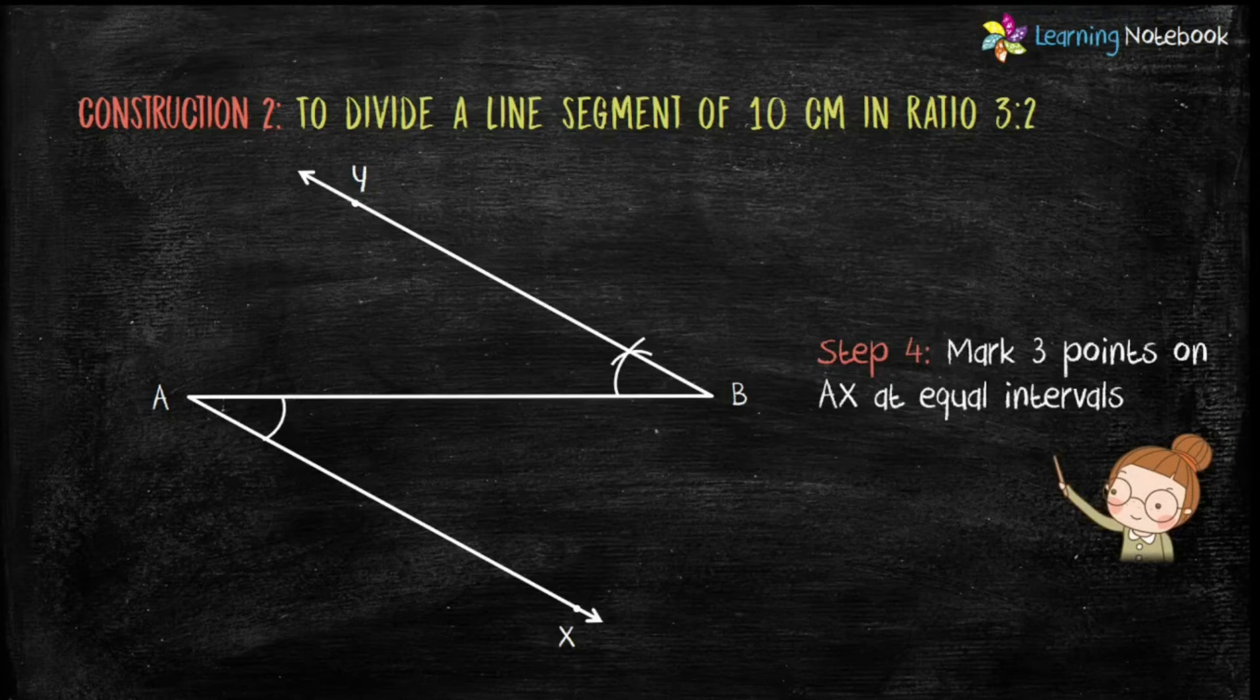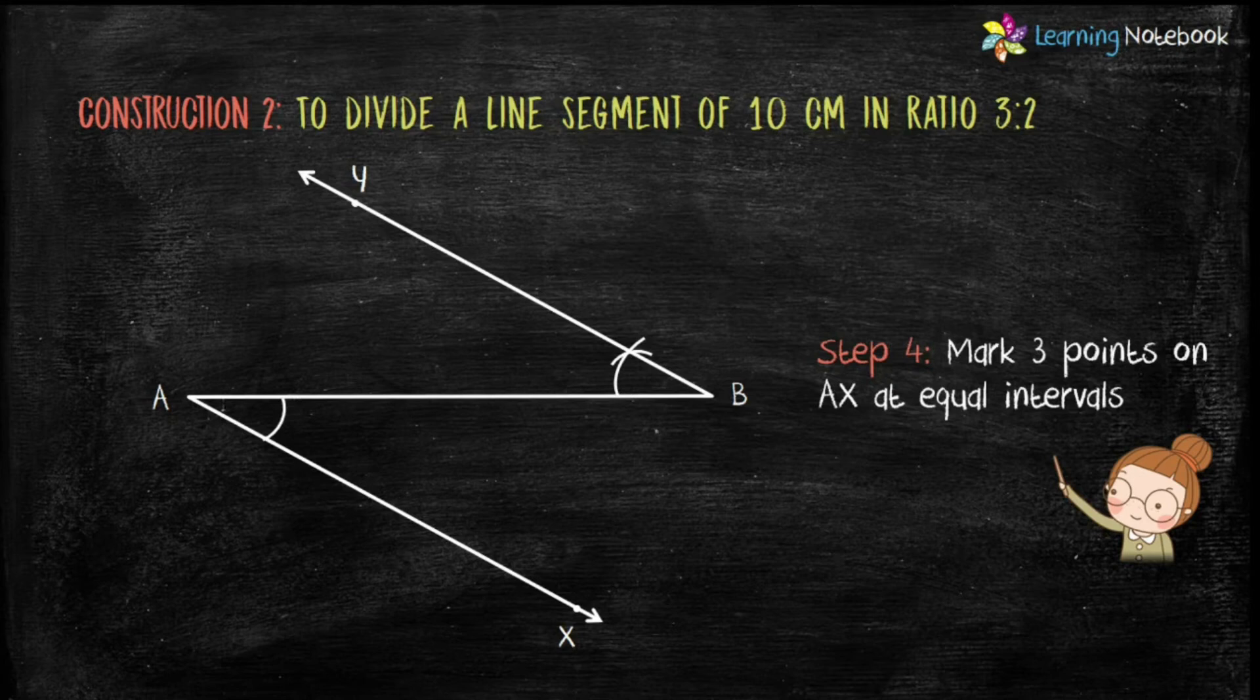Now, we are given the ratio as 3 is to 2. Therefore, step 4 is to divide line AX in 3 parts and line BY in 2 parts.